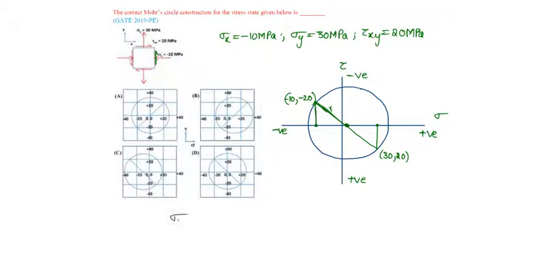We know sigma 1,2 is given as (sigma x + sigma y)/2 ± √[((sigma x - sigma y)/2)² + tau xy²].